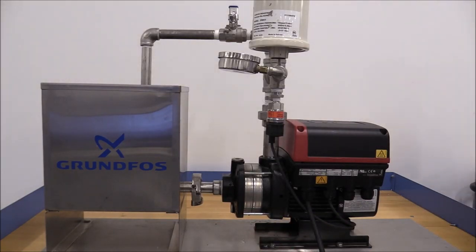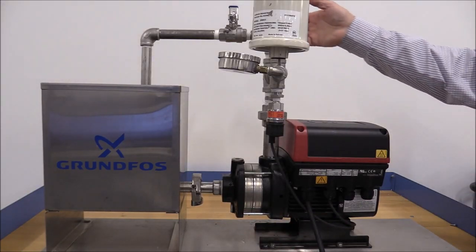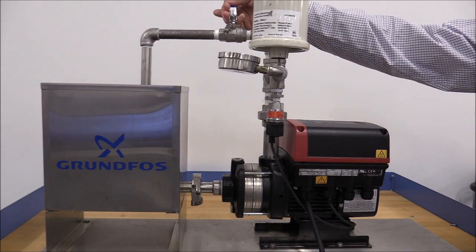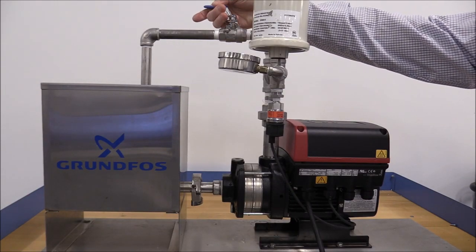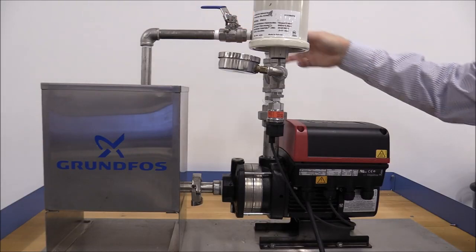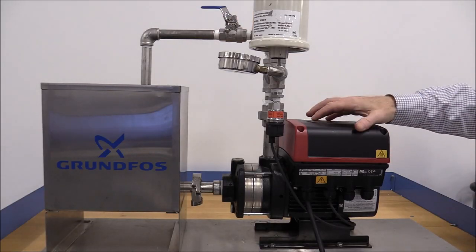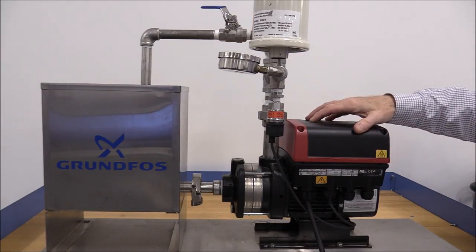I'm going to go ahead and put power to the pump. Then I'm going to slightly open the discharge valve, because you never want to start a centrifugal pump against a closed valve. Then I'll press the on-off button to start the pump.